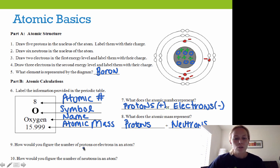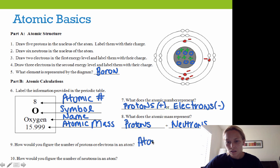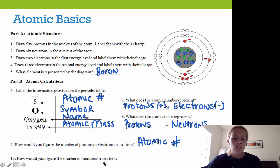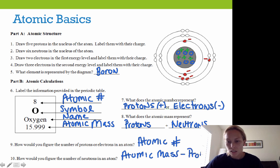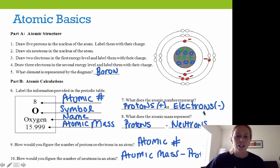To figure the number of protons and the number of electrons in an atom, you would use the atomic number. To figure the number of neutrons, you would take the atomic mass and subtract the number of protons — a nice little equation — in order to get the number of neutrons, because the atomic mass equals the number of protons plus the number of neutrons.